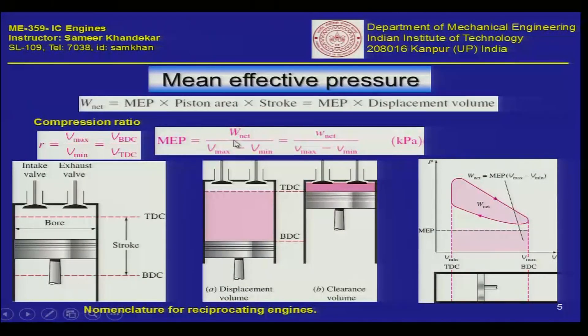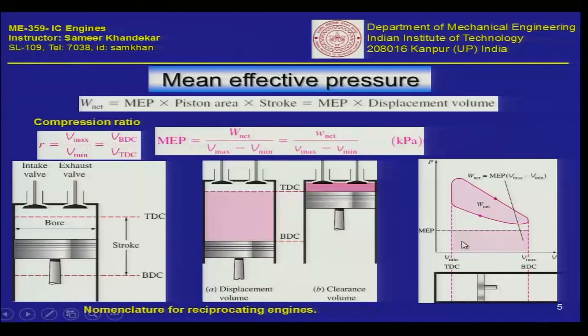To summarize: the mean effective pressure is the equivalent average constant pressure which, if applied on the same engine, would produce the same amount of net work by displacing the piston from TDC to BDC. We will use this concept often when solving problems. Different engine designs operate at different mean effective pressures, making it a very good indicator of engine size or the net power delivered by the engine.